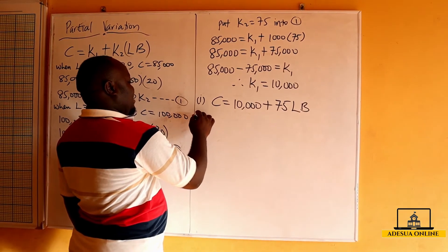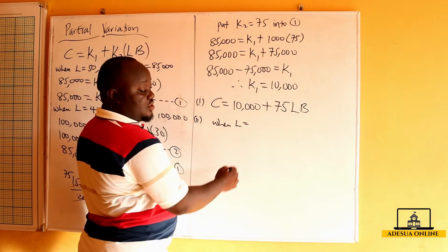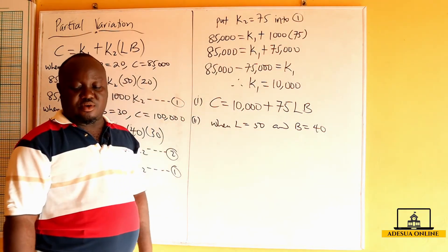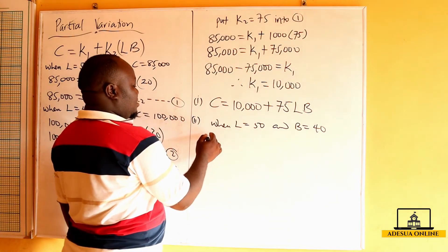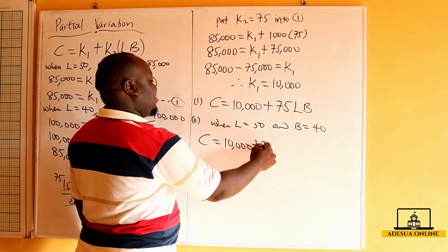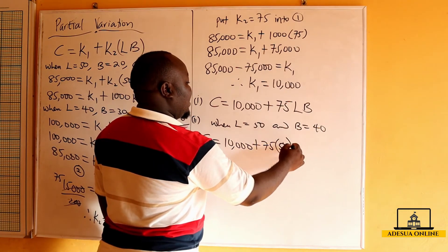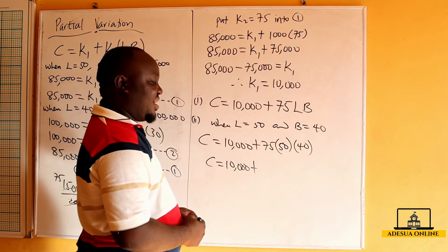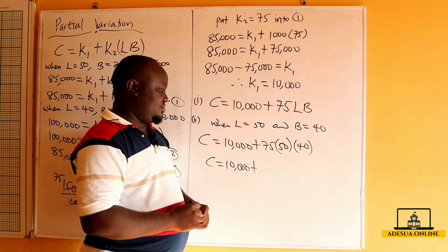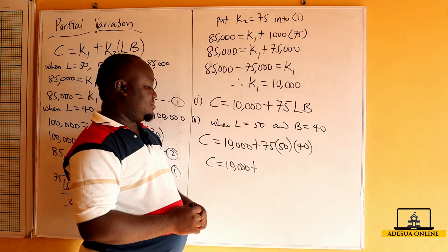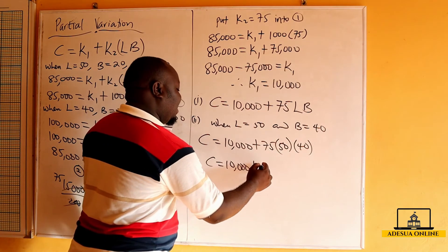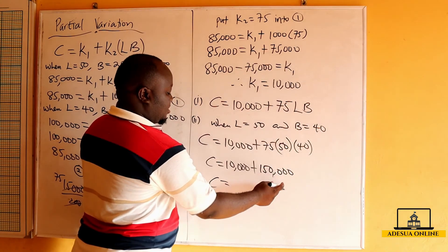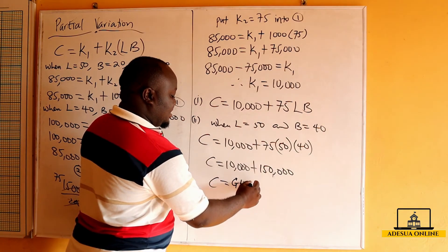From part I, when L = 50 and B = 40, we substitute into the equation: C = 10,000 + 75 × 50 × 40. This gives us C = 10,000 + 150,000, which equals 160,000.